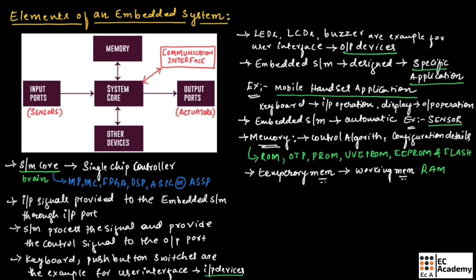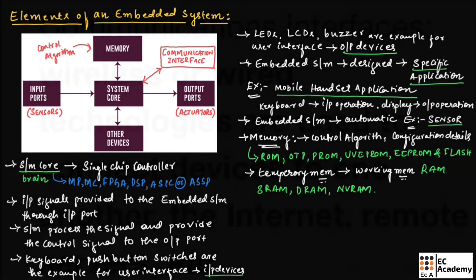Working memory is nothing but random access memory, which is RAM. The different types of RAM can be SRAM, DRAM, and NV RAM. You need to remember that the control algorithm, which is the embedded system firmware, is stored in the memory of an embedded system.